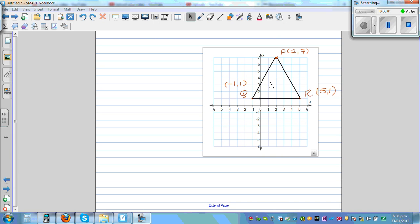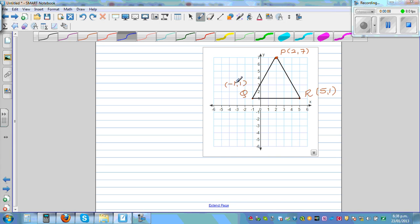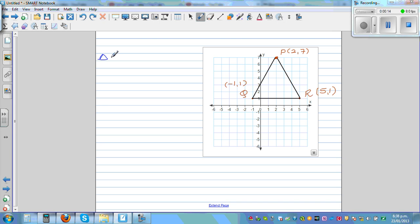This is triangle PQR with coordinates (2,7), (-1,1), and (5,1). We want to prove that triangle PQR is an isosceles triangle.